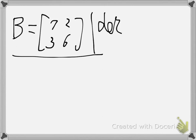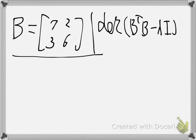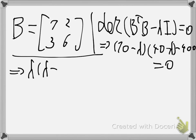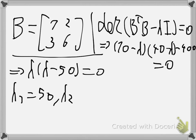We will find that det(B transpose B minus lambda I) equals 0. Solving that, I get that (10 minus lambda)(40 minus lambda) minus 400 equals 0, and so I get that lambda times (lambda minus 50) equals 0. So lambda 1 will be 50 and lambda 2 will be 0.